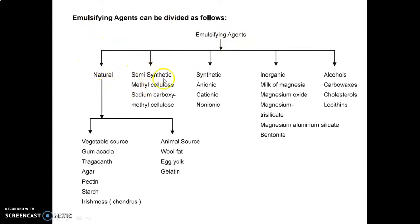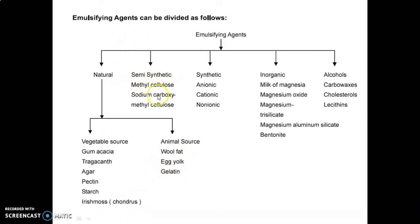Emulsifying agents are classified as natural, semi-synthetic, synthetic, inorganic, and alcohols. Under natural agents, vegetable sources include gum acacia, tragacanth, agar, pectin, starch, and Irish moss; animal sources include wool fat, egg yolk, and gelatin. Semi-synthetic agents include methyl cellulose and sodium carboxymethyl cellulose (sodium CMC). Synthetic agents are anionic (negative charge), cationic (positive charge), and non-ionic (no charge). Inorganic agents include milk of magnesia, magnesium oxide, magnesium trisilicate, magnesium aluminium silicate, and bentonite. Alcohols include carbowaxes, cholesterol, and lecithins.